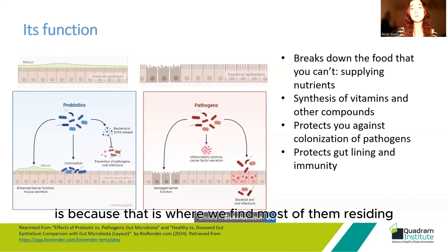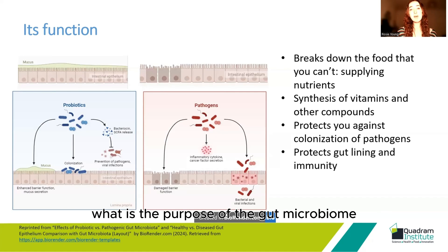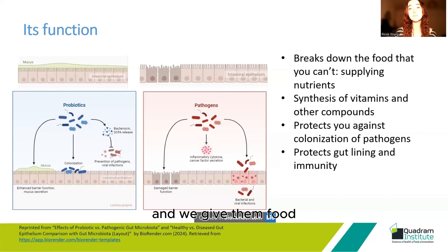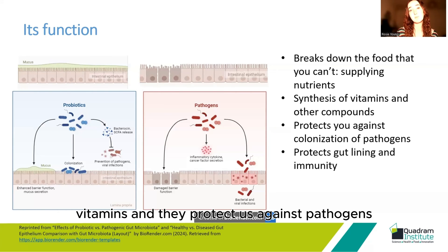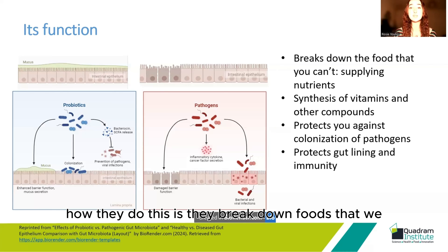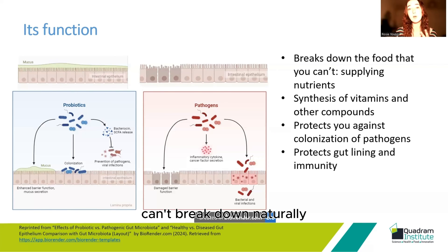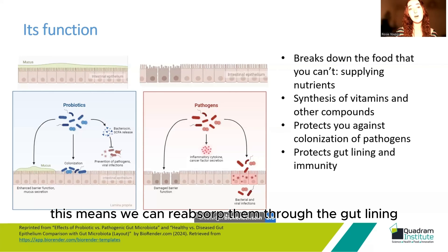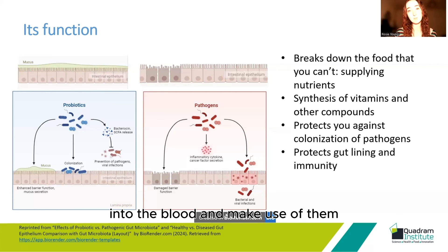What is the purpose of the gut microbiome? We have quite a good relationship with it in the fact that we give our microbes somewhere nice to live and we give them food, and in response they feed us with nutrients and vitamins, and they protect us against pathogens. How they do this is they break down foods that we can't break down naturally — things like fibres and plant materials — but also they can synthesise vitamins and other compounds which are useful for our health, meaning we can reabsorb them through the gut lining into the blood and make use of them.